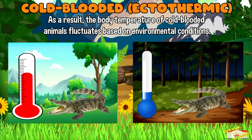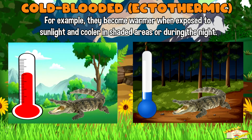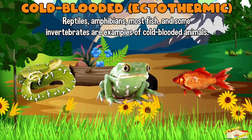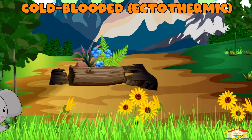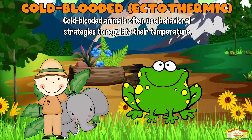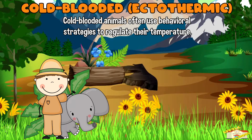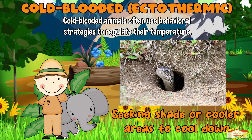As a result, the body temperature of cold-blooded animals fluctuates based on environmental conditions. For example, they become warmer when exposed to sunlight and cooler in shaded areas or during the night. Reptiles, amphibians, most fish, and some invertebrates are examples of cold-blooded animals. Cold-blooded animals often use behavioral strategies to regulate their temperature, such as basking in the sun to warm up or seeking shade or cooler areas to cool down.